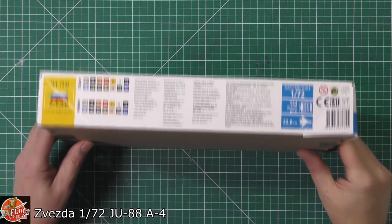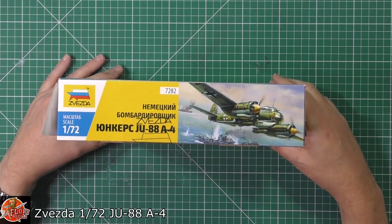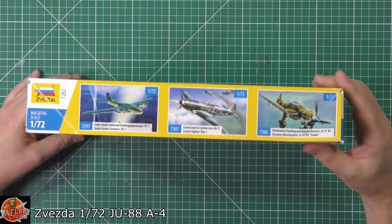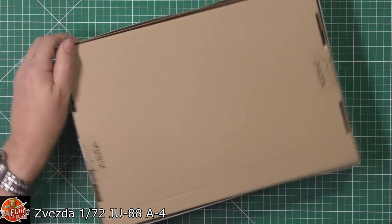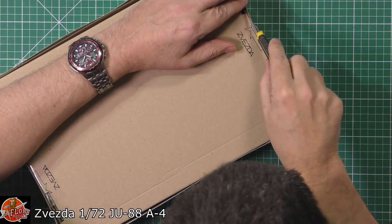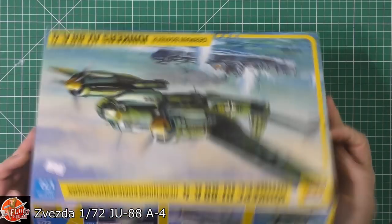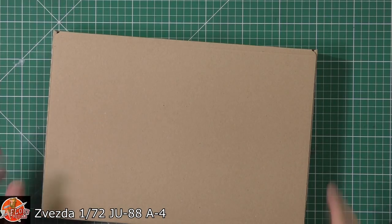Down around on the box, we've got the color call-outs for this one. Kit number is 7282, and round here we've got some of the other bits and pieces that they do as always. And it is sealed, well there's Zvezda's own tag, but at least it's not one of the open-ended ones where we have to fight to get it out of the box.